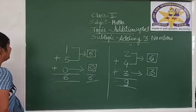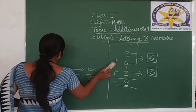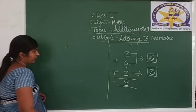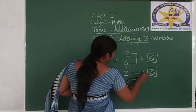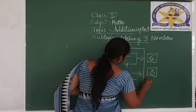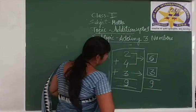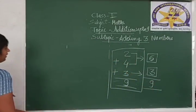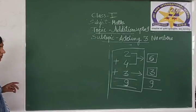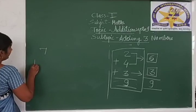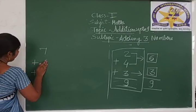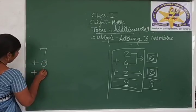We will see one more example here. Copy down the answer in your textbook. Write down 9 here also. Now see the third example: 7 plus 0 plus 1.